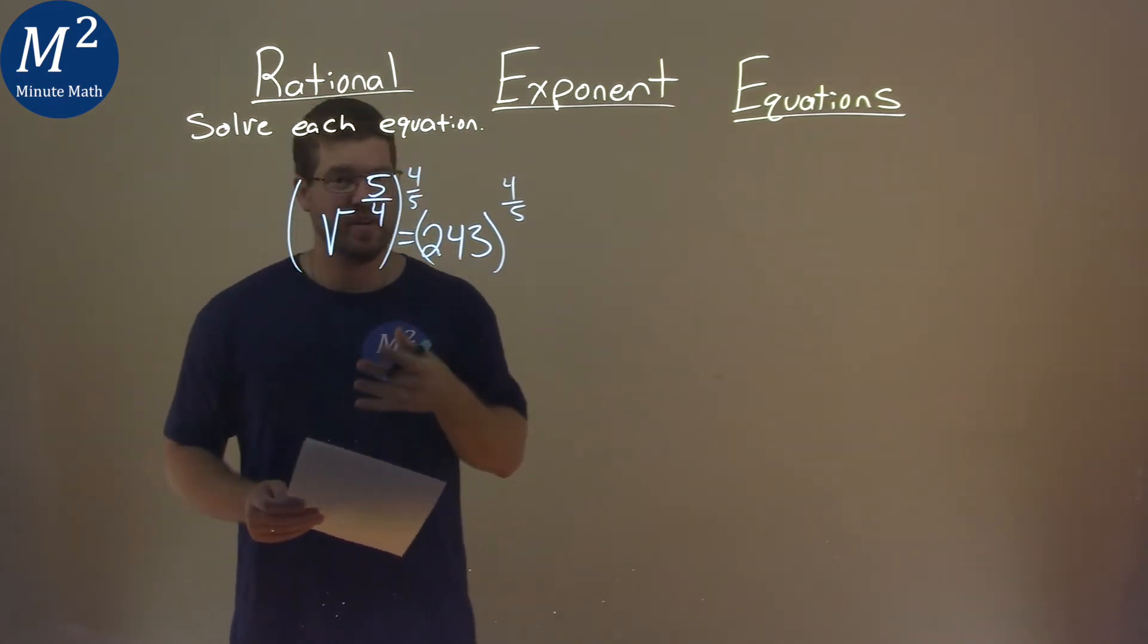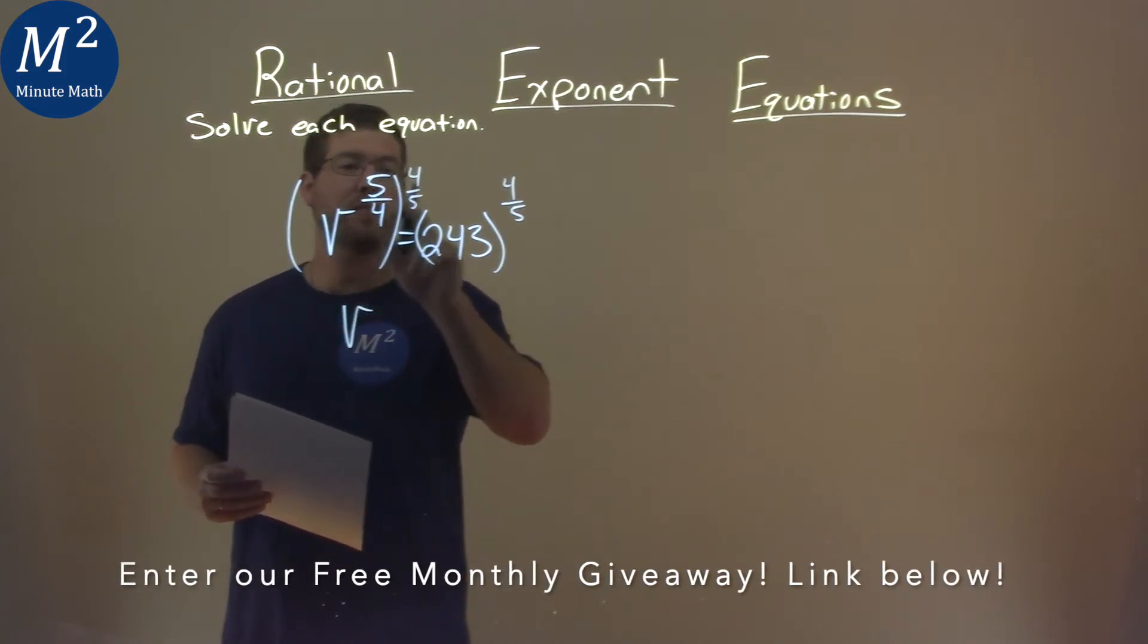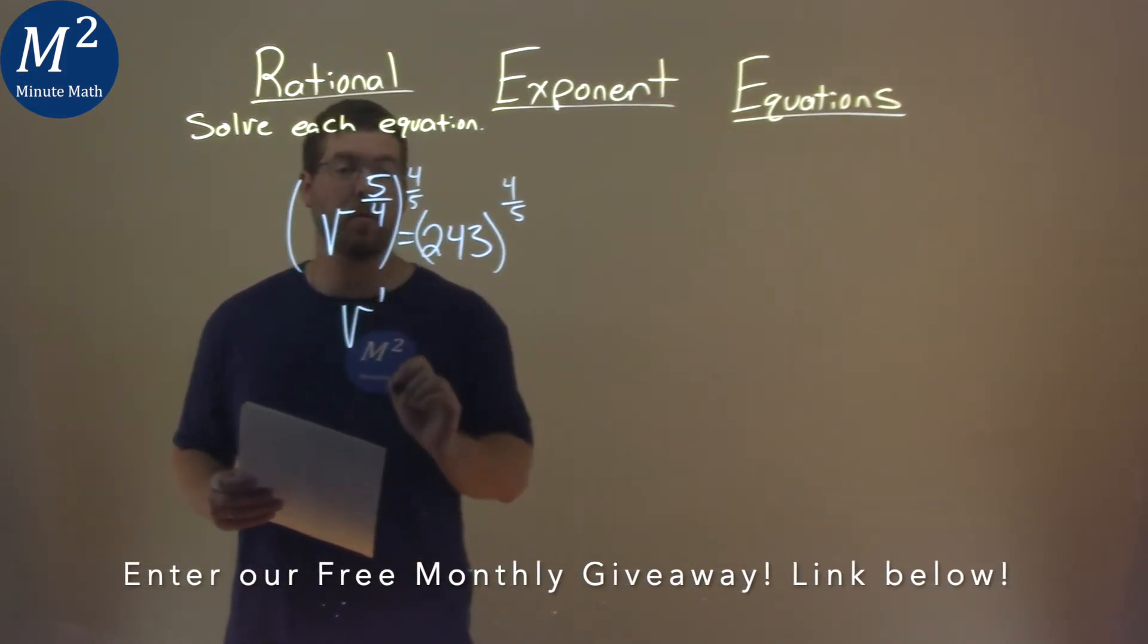What this allows me to do is get v by itself. Our rules of exponents say we take the 5 fourths, multiply it by 4 fifths, and that becomes a 1.